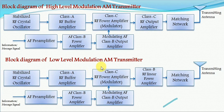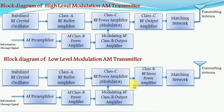Whereas in low level modulation, we are using a class B linear power amplifier. The efficiency of class B is less compared to class C, so the power added to the modulator signal output is low. In this way, a low power signal is generated using a linear power amplifier in the low level modulation AM transmitter.